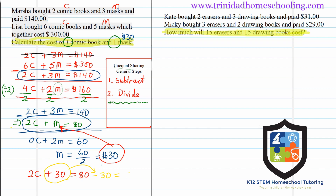Bringing the $30 across, it becomes minus $30, giving us: 2 comic books equals $50. So 1 comic book equals 50 divided by 2, which is $25. The third part of unequal sharing is to add it back — we took the $30 and substituted it back to find the cost of one comic book.